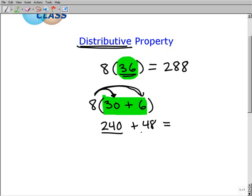And guess what? 240 plus 48, that's really easy to add up. That is simply 288. So we got the same answer, but we did it in a different manner. We used the distributive property.